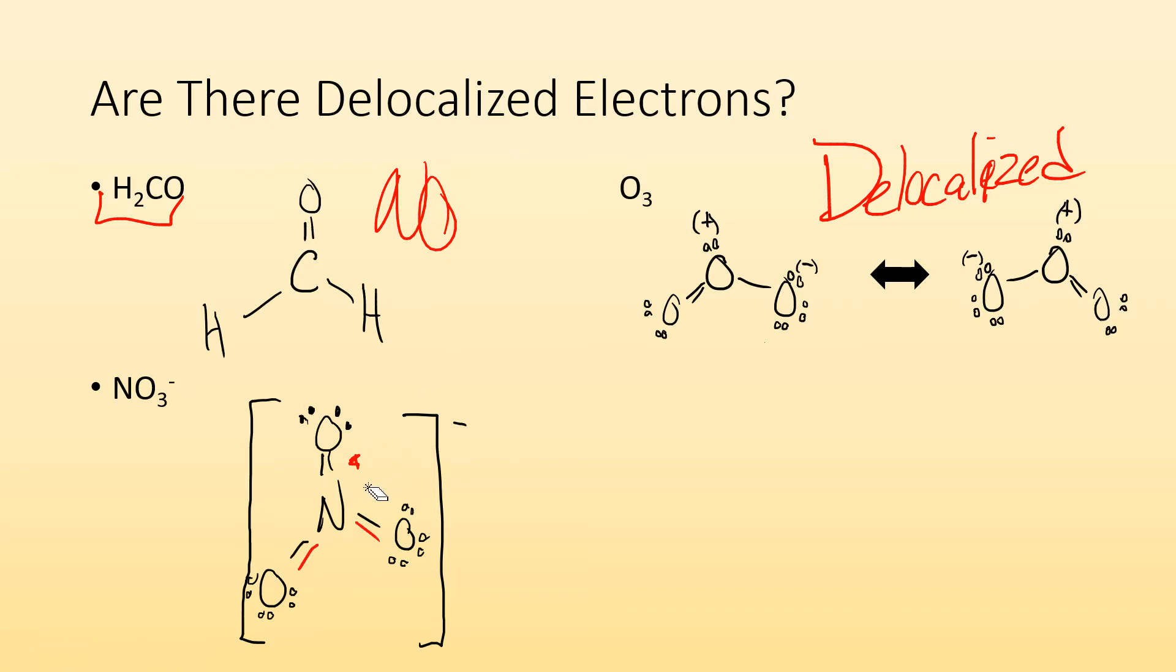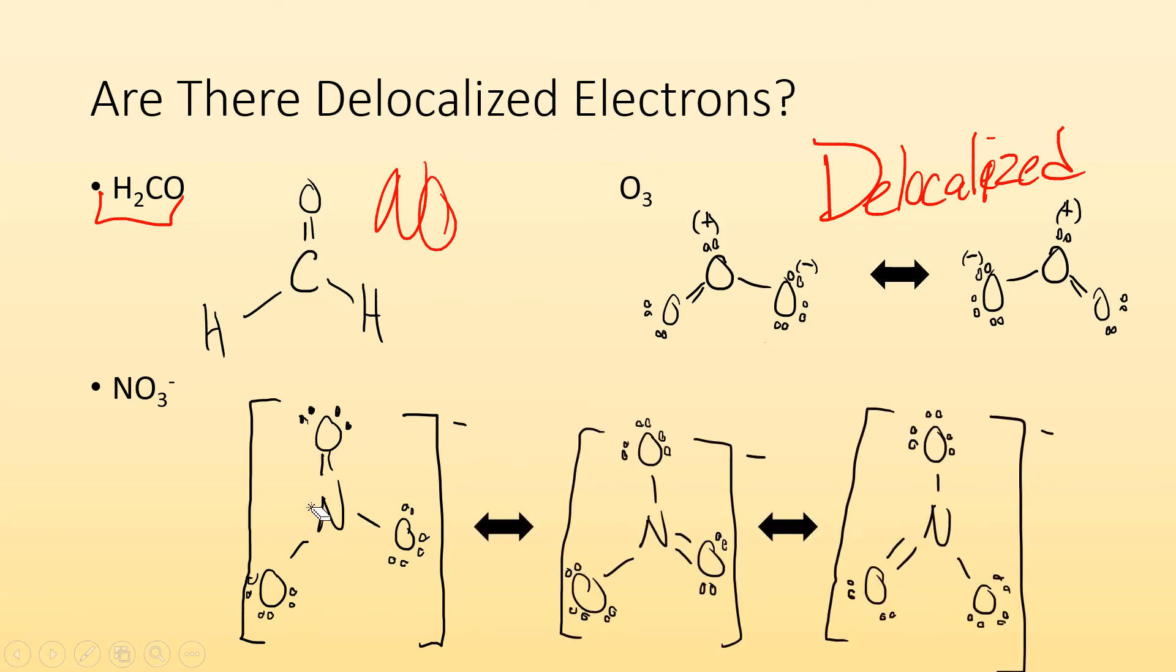The fact that I can ask this question and they're equally good Lewis structures tells me that I have resonance structures. So now I got to ask myself, I got resonance structures. Do they involve pi bonds? And the answer is yes. So NO3 minus also has delocalized electrons. I can expect to see delocalized electrons in the nitrate ion.